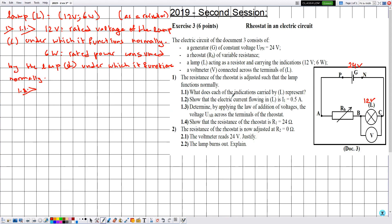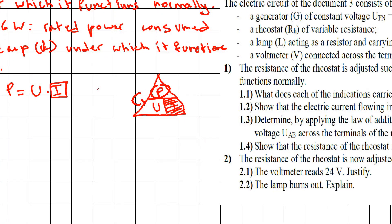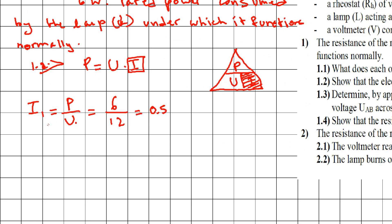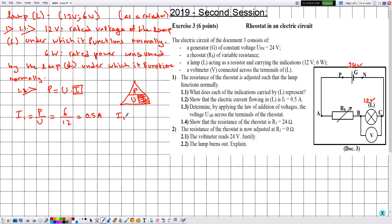In part 1.2, we must show that the electric current flowing in L is I1 = 0.5 amperes. Because the lamp L is functioning normally, the applied voltage is 12 volts and the consumed power is 6 watts. We use the relation P = U × I. Constructing the formula triangle with P at the top and U and I at the bottom, I1 = P ÷ U = 6 ÷ 12 = 0.5 amperes, with all values in SI units.